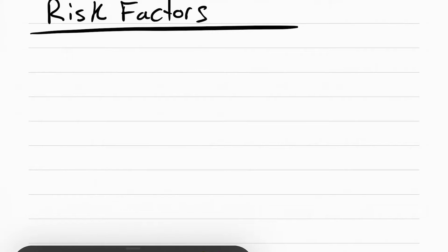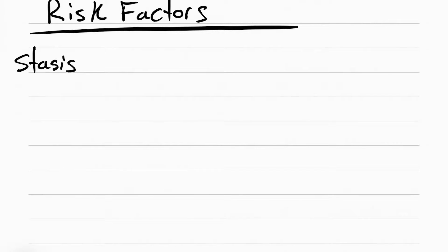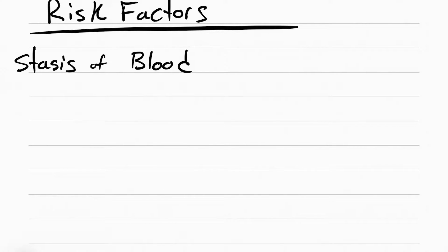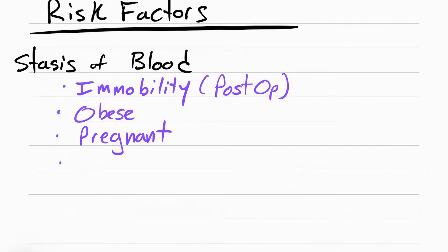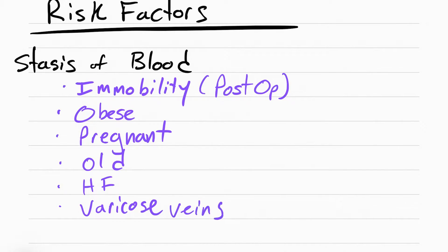The person at risk for getting a DVT is someone who has something called stasis of blood. This means the blood is not moving, and this can include anyone who's immobile, like a post-operative patient, an obese patient, pregnant, old, heart failure, and patients with varicose veins. All of these conditions cause the blood to not flow as well.